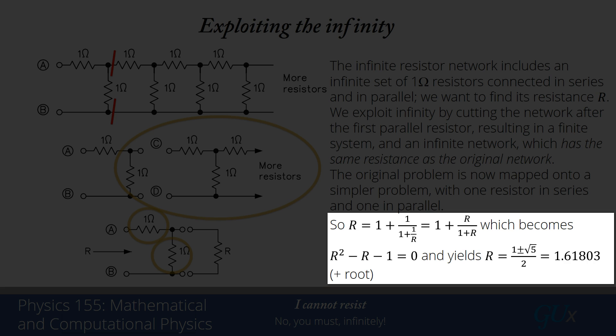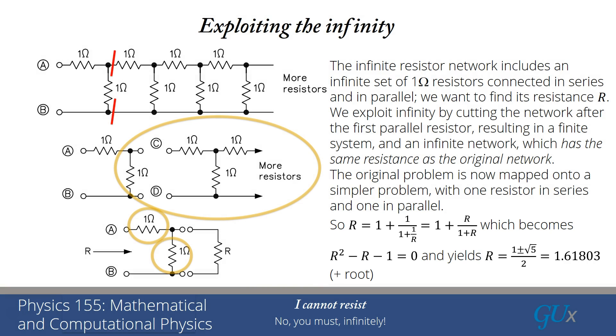The resistance can't be negative. It has to be a positive number. So the negative root is not physically relevant. I can throw that negative root out and I'm left just with the positive root. If I evaluate it, I get 1.61803 and so on. It's an irrational number for the root.